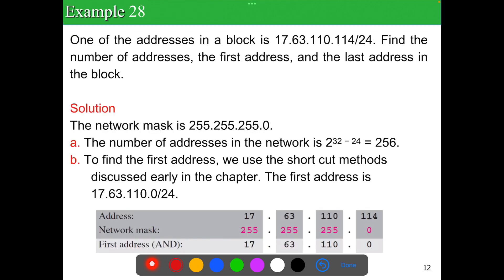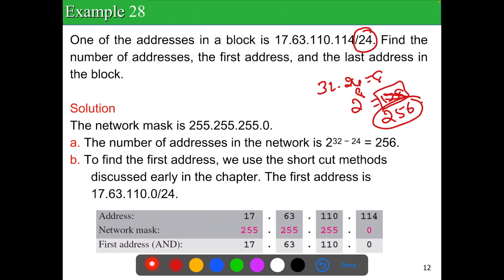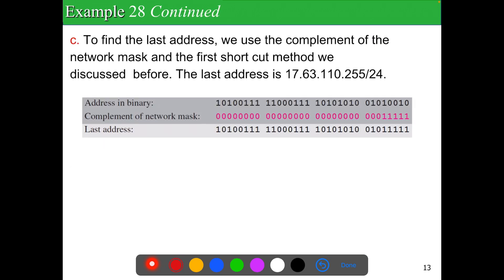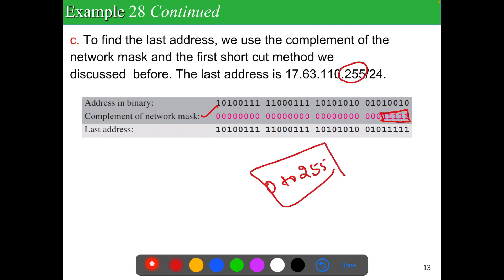Example: one of the addresses in a block is given as /24. Find the number of addresses, the first address, and the last address. With /24: 32 − 24 = 8, so 2^8 = 256 addresses. The network mask has 24 ones and 8 zeros (255.255.255.0). The first address ends in .0 and the last address ends in .255, giving a range of 256 computers.